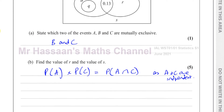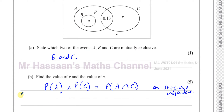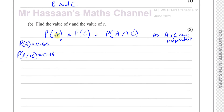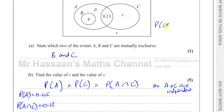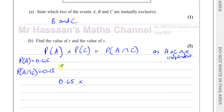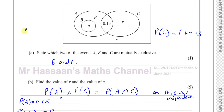We know P(A) = 0.65 and from the diagram P(A ∩ C) = 0.13. We can also see that P(C) = R + 0.13. So: 0.65 × (R + 0.13) = 0.13. Dividing both sides by 0.65, we get R + 0.13 = 0.13 ÷ 0.65 = 0.2. Therefore R + 0.13 = 0.2.